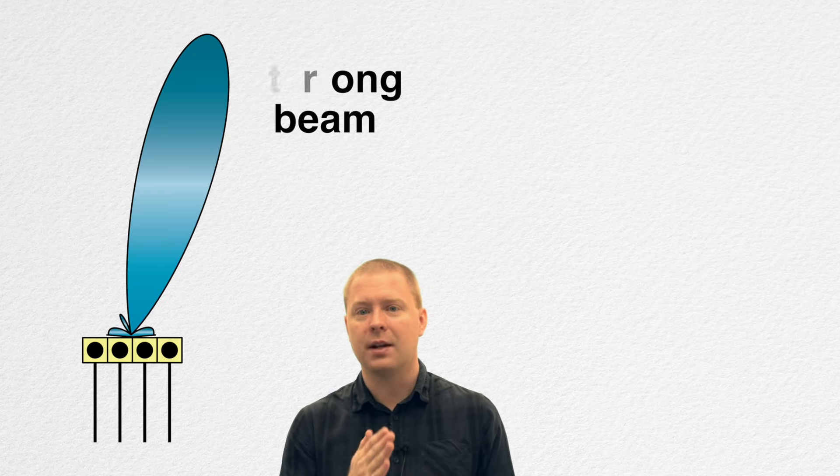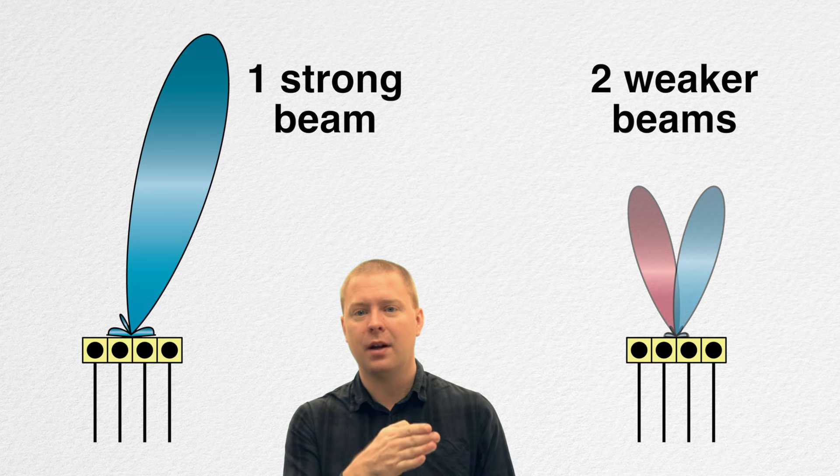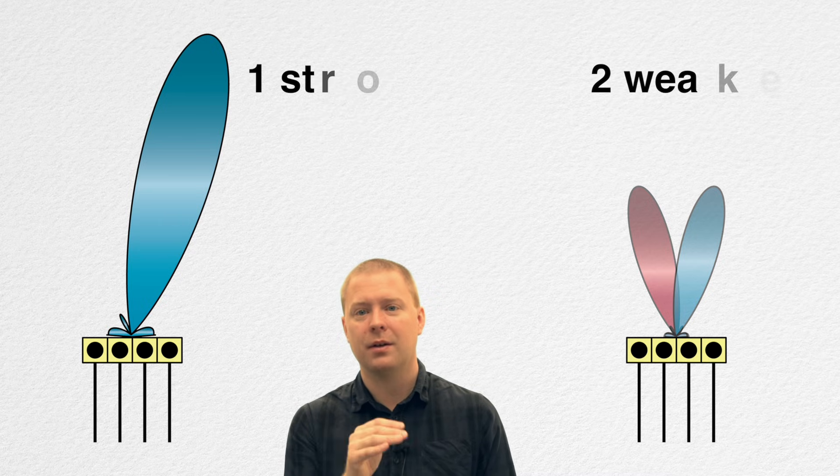You can send a blue signal in this direction, a red signal in this direction, and then different users in different directions can receive these ones. Since the amount of energy that you can radiate from your radiating elements is limited, you need to share them between them. So instead of sending one strong beam here, you send half of the beam here, half of the beam here, for example.